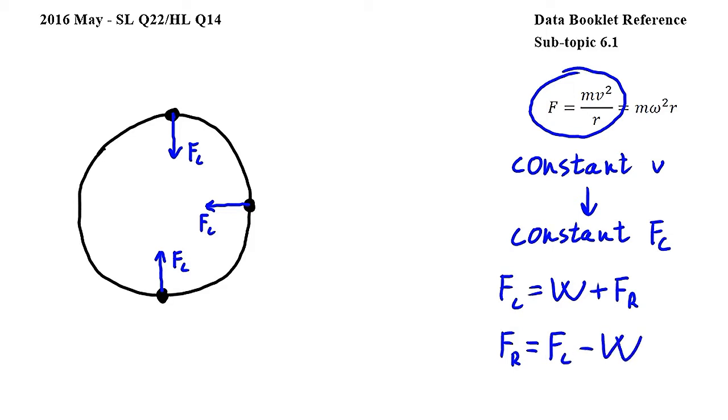Since the magnitude of Fc and W are constant, while the direction of Fc constantly changes, and the direction of W is always pointing downwards, we can already see that Fr will not be constant, hence it will not be zero everywhere either, so we can eliminate answers A and B.